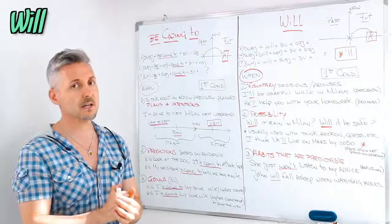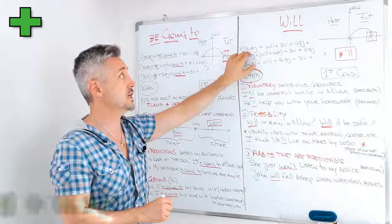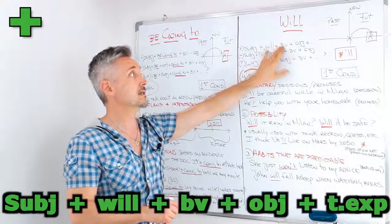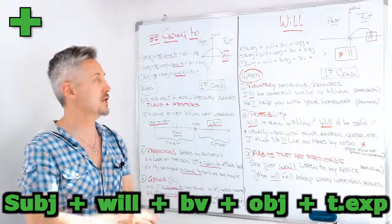Let's look at the different types of sentences. So for a positive sentence, we need the subject plus will plus the base of the verb, then the object, and then the time expression.